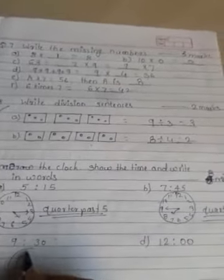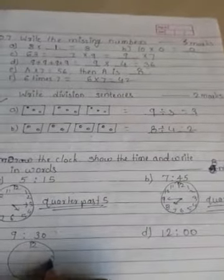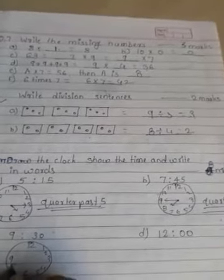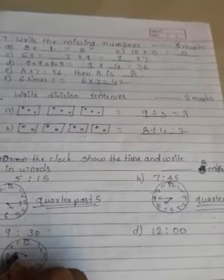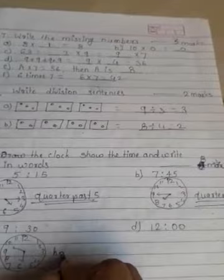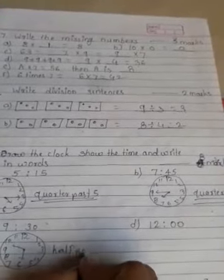Next clock: draw the numbers. Small hand between nine and ten, big hand on six. Write: half past nine.